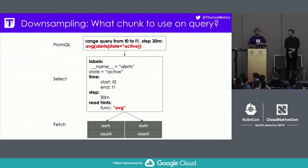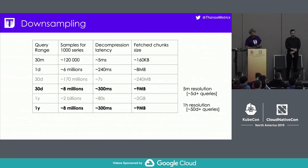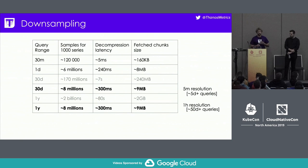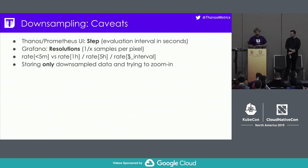Let's look at the result — what we solved. Instead of high-resolution data for month or year queries, by using downsampled data we can achieve a much more user-friendly experience and lower load on the Thanos system. Performing those long-time range queries is much cheaper and faster, which was our initial goal.